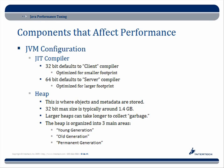On a 32-bit system this defaults to the client compiler, optimized for a smaller footprint. On a larger system — say two processors, 64-bit, with over two gigabytes of RAM — you'll be looking at using the server compiler, which is optimized for a larger footprint.